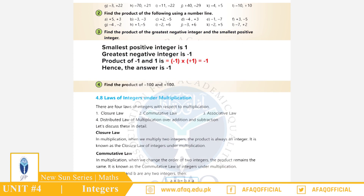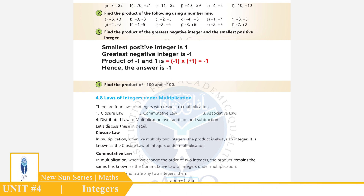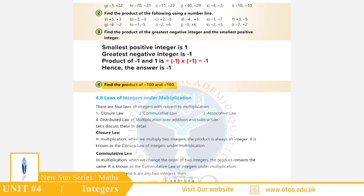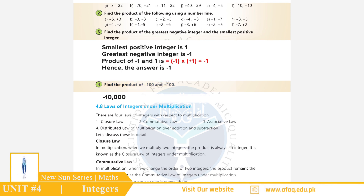Question Number 3: Find the product of the greatest negative integer and smallest positive integer. Smallest positive integer है +1। Greatest negative integer को +1 के साथ multiply करेंगे तो जवाब आएगا greatest negative integer۔ Question Number 4: Find the product of (−100) and (+100). جواب: −10,000.